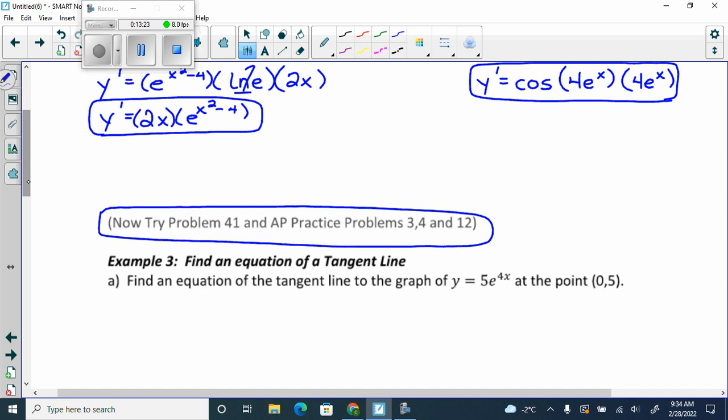If it was 4E to the 4X, you'd get 4E to the 4X times 4. Like if it was like 4X, E to the 4X, would you stop to get chain rule? Or is it only like a 5? No, if it was 4E to the 4X, you'd get 4E to the 4X times 4. You'd have to chain again. Yeah.